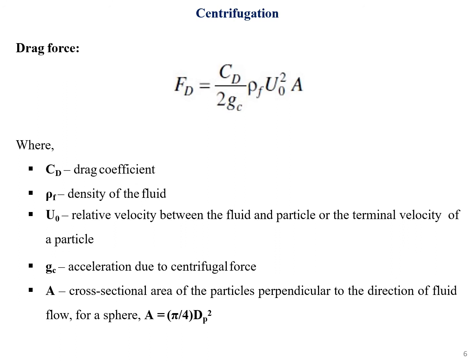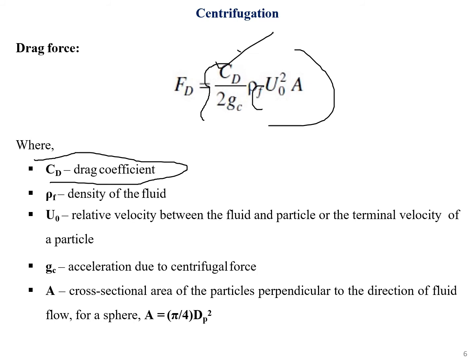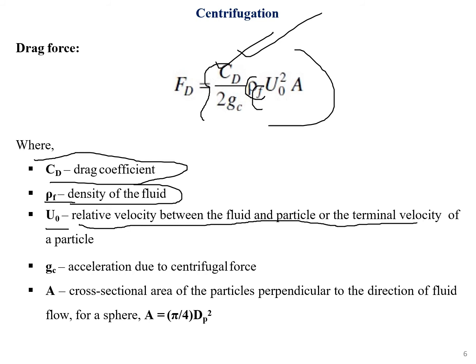The drag force equation is a bit different. It is represented as cd / (2gc) × ρf × u₀² × A. Here cd is the drag coefficient — the resistance as the particle rotates in circular motion, which will be given in numerical problems. ρf is the density of the fluid; u₀ is the terminal velocity or relative velocity between the fluid and particle; gc is the acceleration due to centrifugal force; and A is the cross-sectional area of the particle perpendicular to fluid flow.